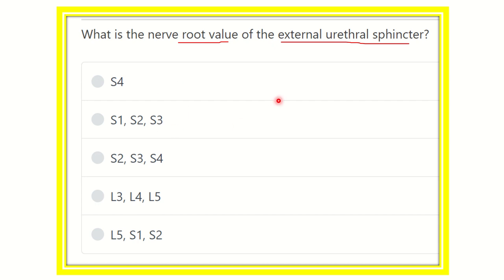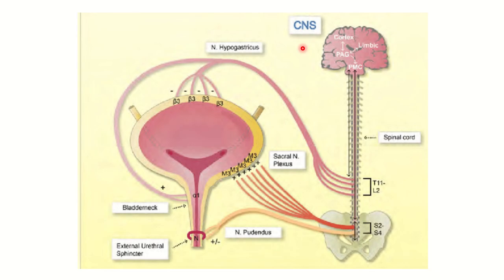We need to find the nerve that supplies the external urethral sphincter and its root value. We can see the urinary bladder and different parts of the urethra. From the spinal cord, different nerves arise — the hypogastric plexus derived from thoracic 11 to lumbar 2 provides sympathetic supply, while from sacral 2, sacral 3, and sacral 4, some fibers go to the M3 receptor of the urinary bladder.